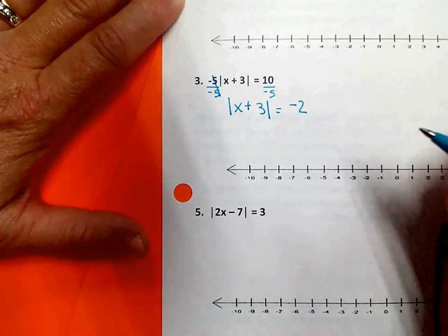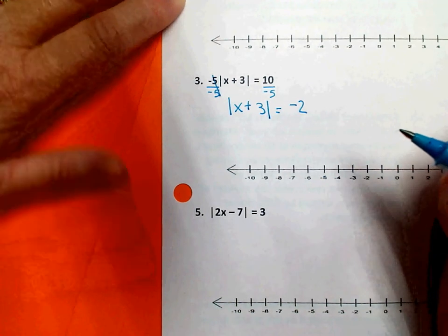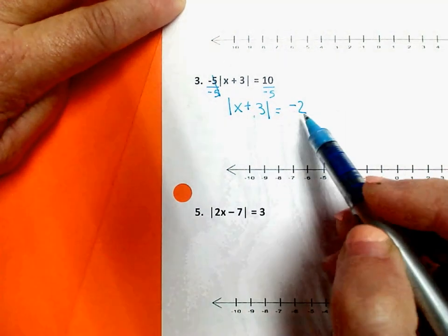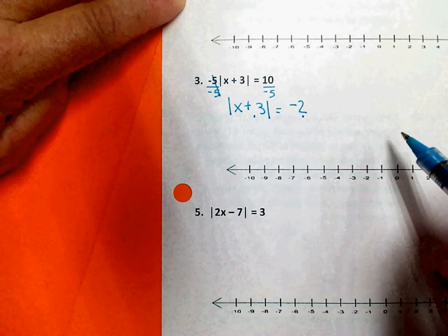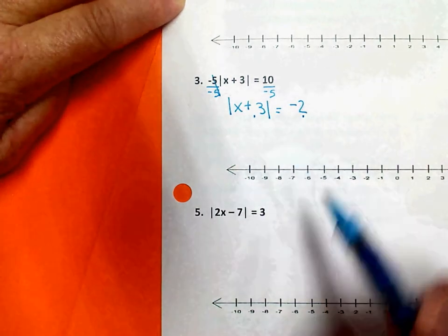Now normally at this point, I would set up my two parts. I would say x plus 3 equals this, and x plus 3 equals negative of that, and I would solve both of them.